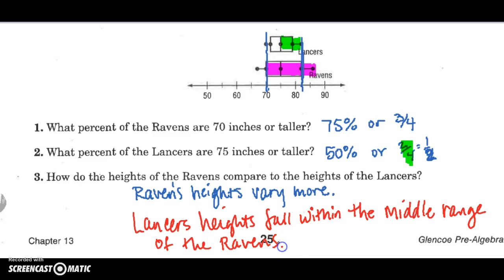So 50% of the Ravens' heights fall within the range of the Lancers. So I've worded it a little better here. Lancers' heights fall within the mid-range, which is, we know, technically the interquartile, the mid-range of the Ravens. Okay, y'all have a great day.